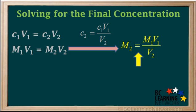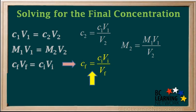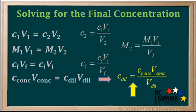Solving this equation for final concentration M2 gives M2 equals M1V1 over V2. Solving this equation for final concentration CF gives CF equals CIVI over VF.